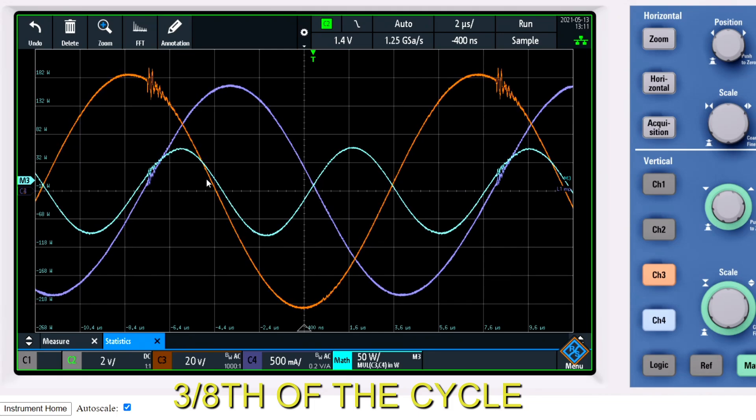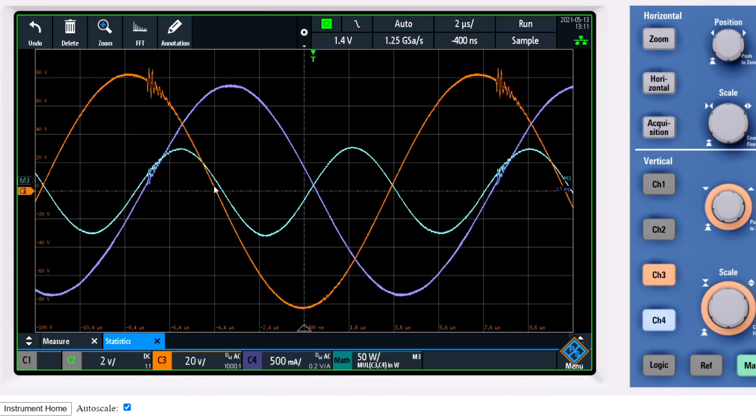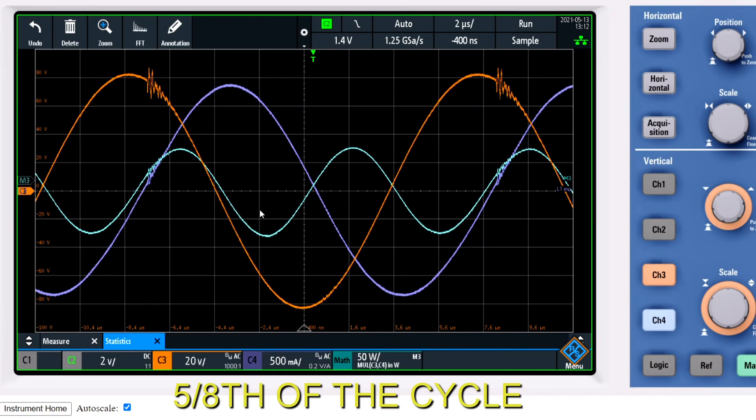And then here starts the third quarter. And in the middle of the third quarter is the negative power maximum again, where power is being generated. This is the five eighths part, fifth eighths.